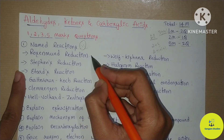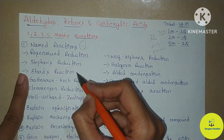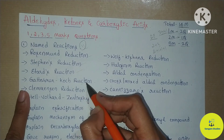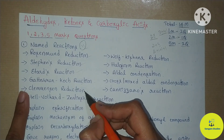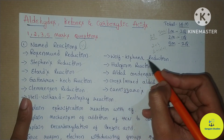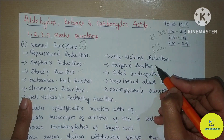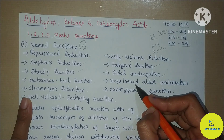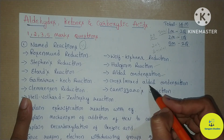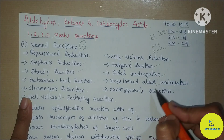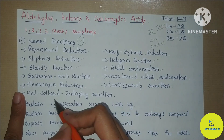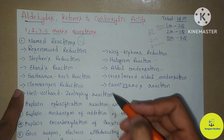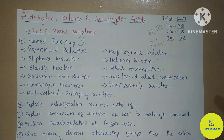The 11 important reactions are: Rosenmund Reduction, Stephens Reduction, Etard Reaction, Gattermann-Koch Reaction, Clemmensen's Reaction, Wolf-Kishner Reduction, Haloform Reaction, Aldol Condensation, Cross or Mixed Aldol Condensation, Cannizzaro Reaction, and Hell-Volhard-Zelinsky Reaction. These 11 reactions are the same key reactions to study.